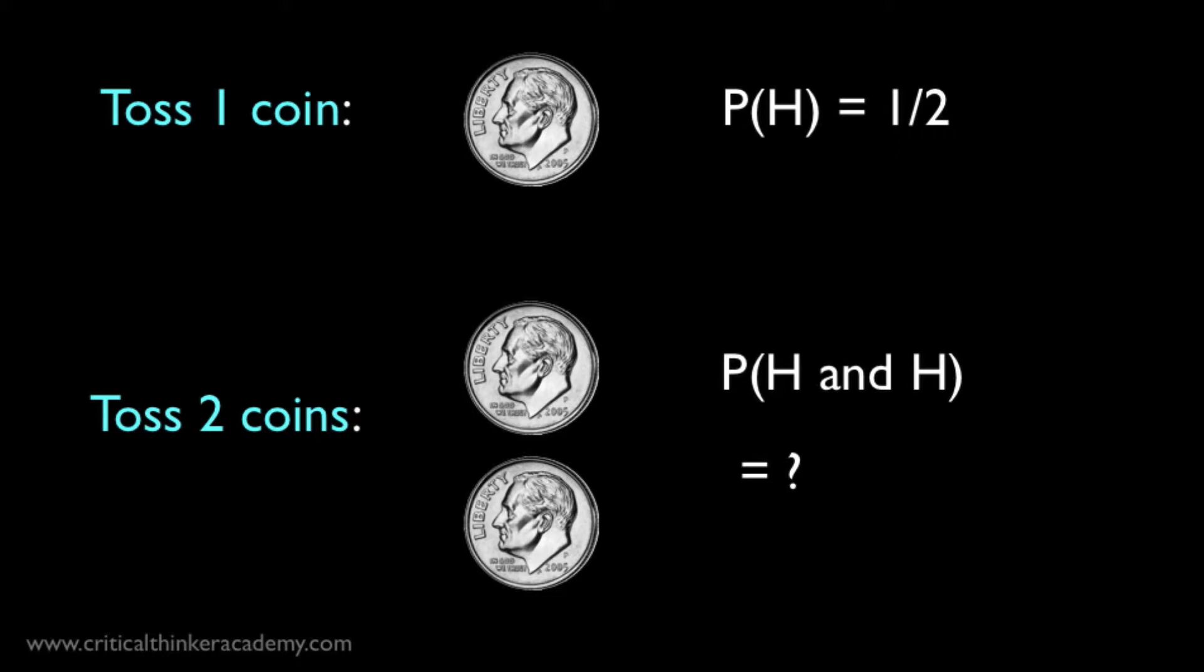Most people will see the answer right away, because we're familiar with these sorts of cases. We know that the probability of both landing heads is going to be less than the probability of just one landing heads. When we're dealing with fractions, we know that multiplying by fractions gives us a smaller number.